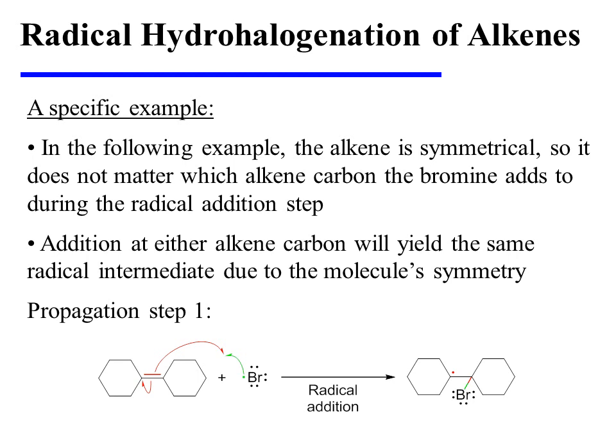Let's consider the radical hydrohalogenation of this symmetrical alkene substrate. The initiation steps are identical to those in the generic mechanism previously. During propagation step one, bromine will add to the alkene pi bond, generating a carbon-centered radical. Since the alkene is symmetrical, it does not matter which alkene carbon the bromine adds to.